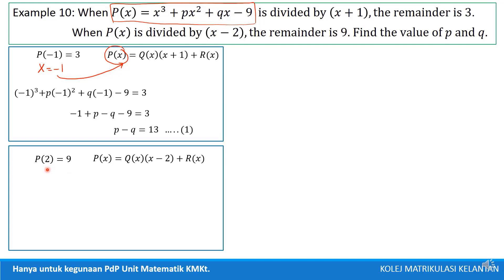Meaning, we will substitute this value of x, x equal to 2, into this polynomial. Try to do by yourself to get the second equation. So do you get the second equation? Let's see. So, the second equation is 4P plus 2Q equals to 4.